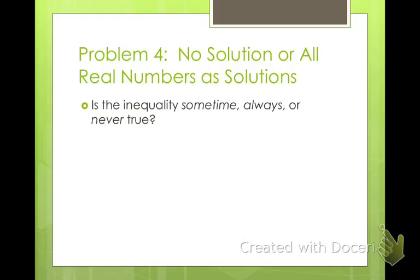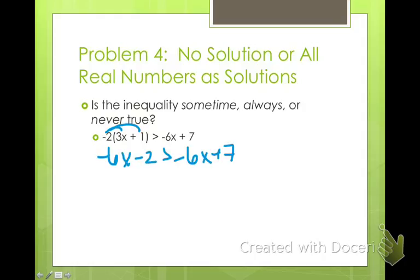So just like with the equations, inequalities can also sometimes, always, or never be true. So let's go ahead and solve this one. I'm going to take it and distribute this through. We get negative 6X minus 2 is greater than negative 6X plus 7. Can you see that we have the same number that we're starting with here? If we subtract 2, are we ever going to have more than if we add 7? No. So this would be never true.